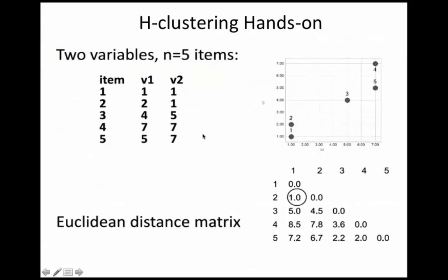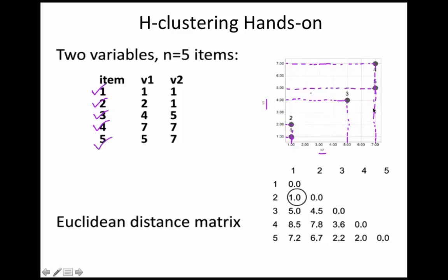We are choosing only five items, and each item has a v1 and v2, similar to your y-axis and x-axis. For the first entry, v1 is 1 and v2 is 1. For the second entry, v1 is 2 and v2 is 1. For the third entry, v1 is 4 and v2 is 5. For the fourth entry, you have 7 and 7. For the fifth entry, you have 5 and 7. So for every item you have an x and y coordinate.